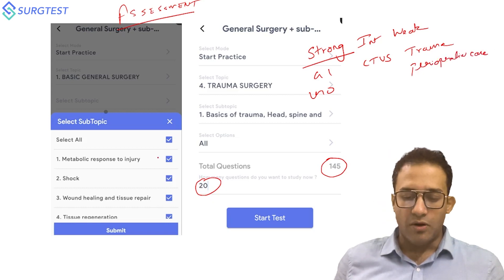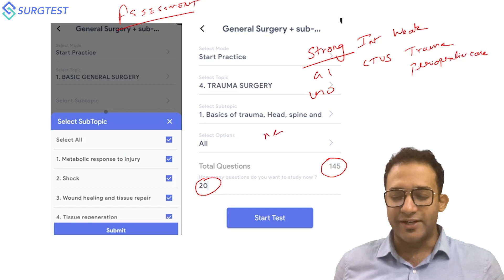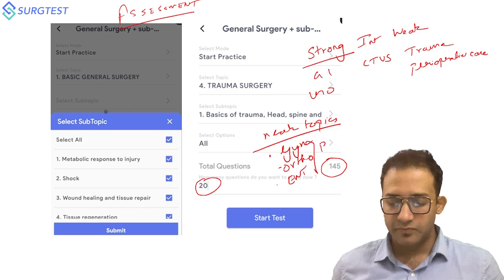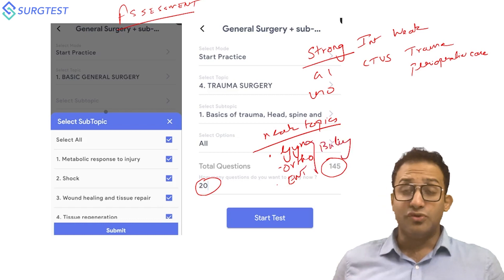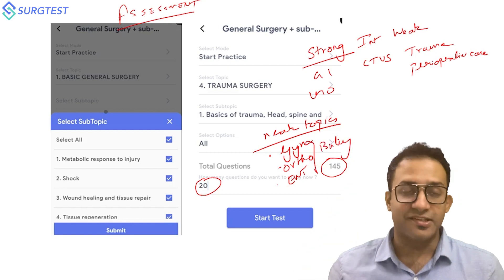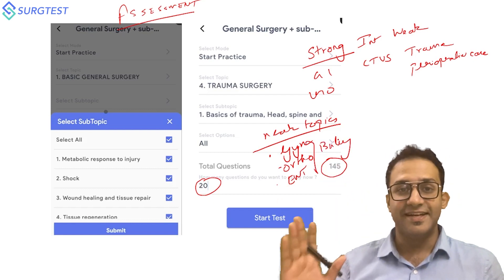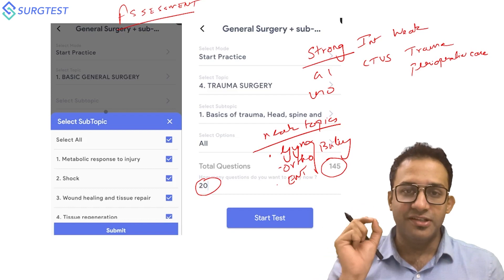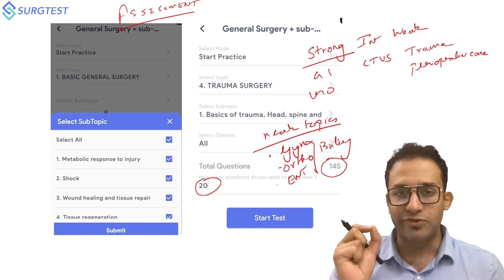You can say strong GI, uro weak, intermediate CTVS, weak trauma perioperative care. For most of us, the universally weak topics are going to be gynec, ortho, and ENT from Bailey. So at the last minute, would you recommend that you study these topics? I would say don't study these topics, it is going to be a waste of time.